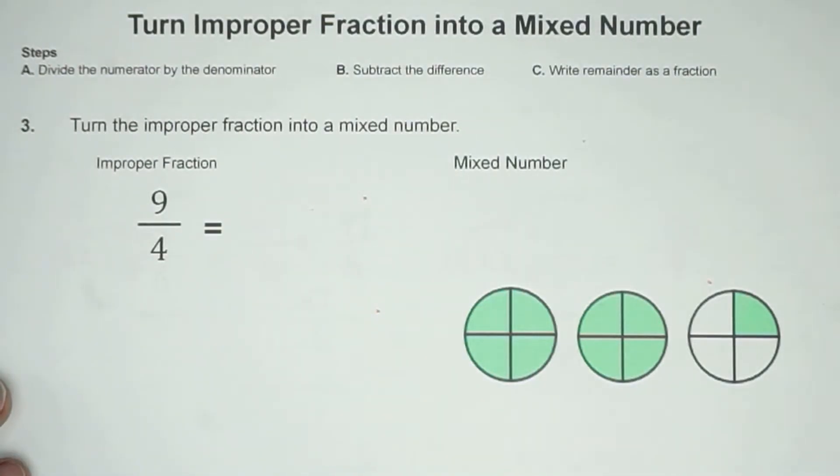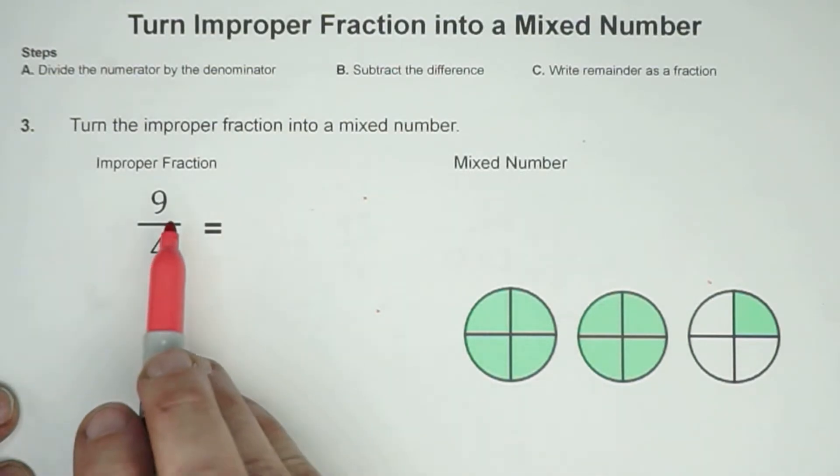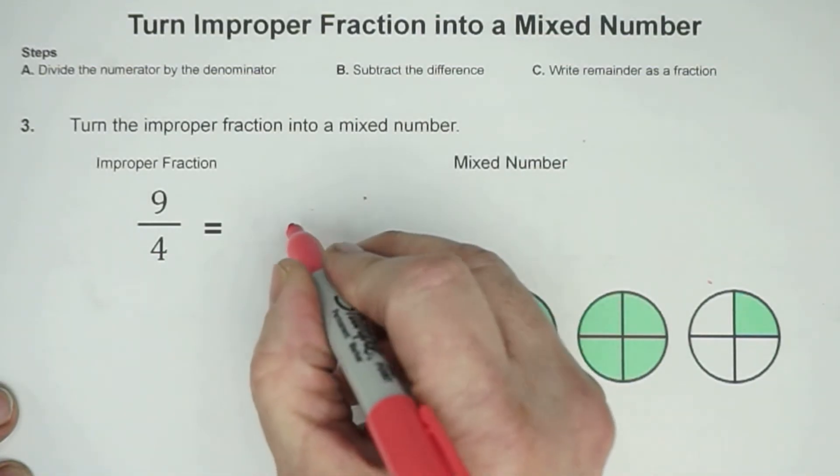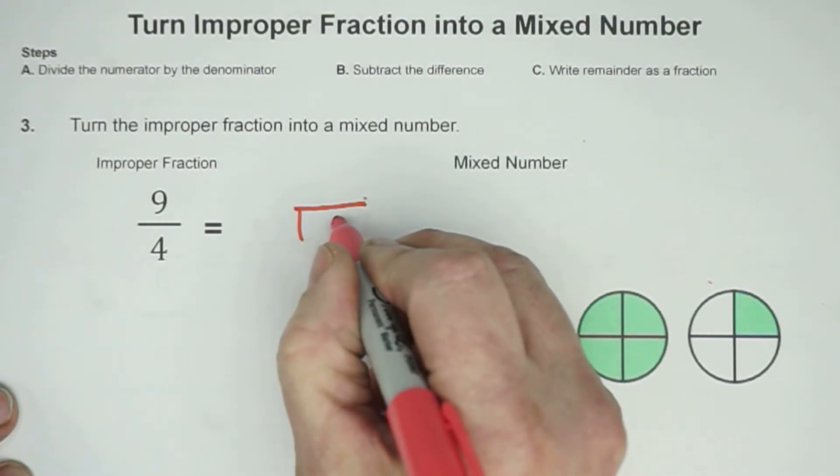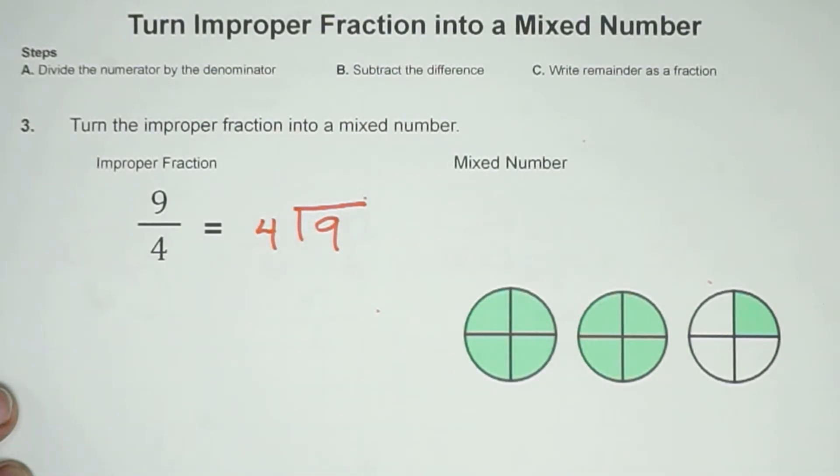Let's try one more. We're going to turn the improper fraction into a mixed number. Our first step is to divide the numerator by the denominator. So in other words, 9 divided by 4.